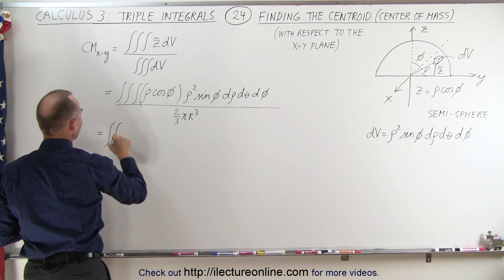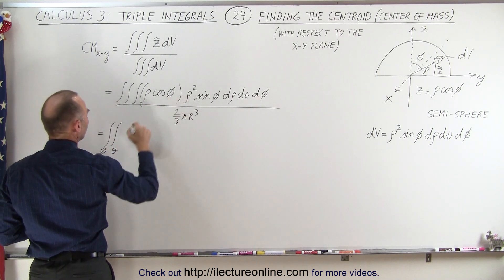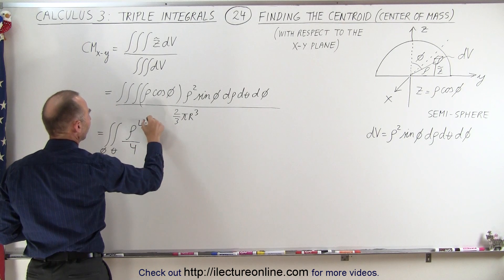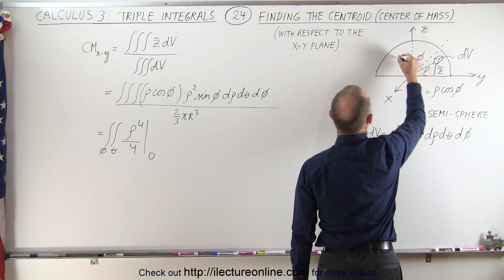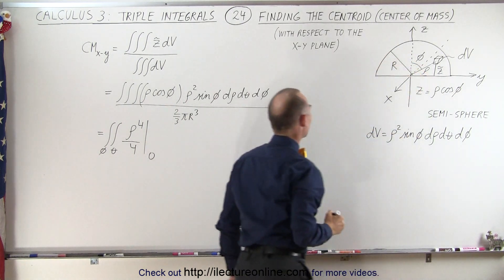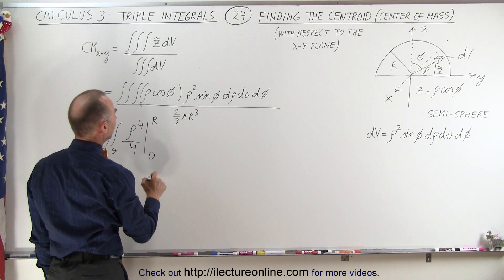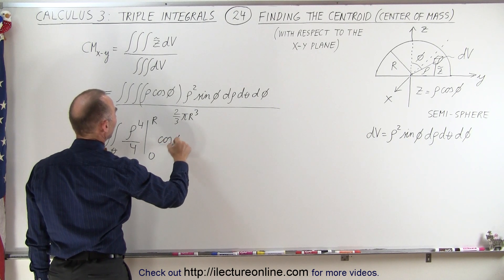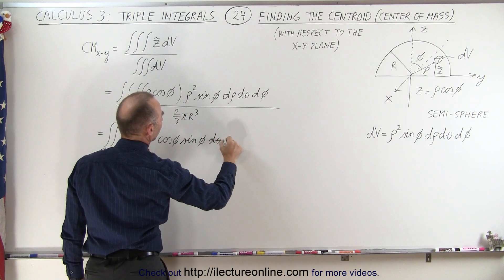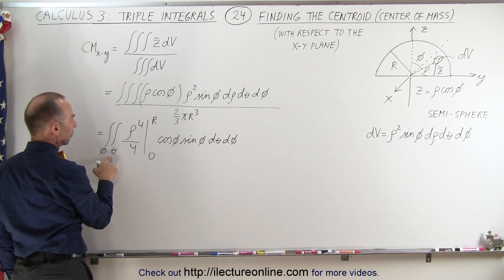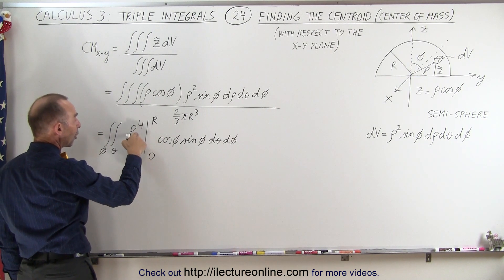We still have the double integral over theta and over phi, but now we have rho to the fourth over four evaluated from zero to r. What we have left is cosine of phi times sine of phi, giving us d theta and d phi. When we plug in the lower limit we get zero, and when we plug in the upper limit we get r to the fourth over four.